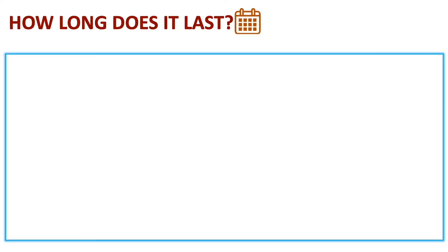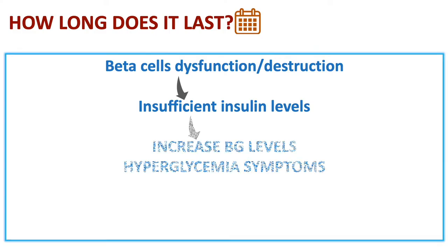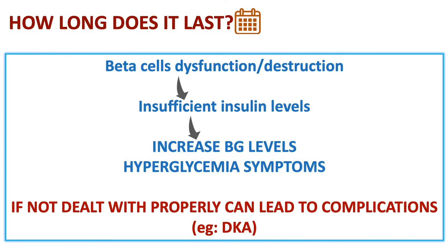To summarize: when there is beta cell dysfunction or destruction, there is insufficient insulin being released. Insufficient insulin leads to increased blood glucose levels and hyperglycemia symptoms. If this is not dealt with properly, this can lead to complications such as DKA, or diabetic ketoacidosis.